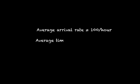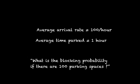The cars arrive at random and the cars stay parked for a random time. So let's say you observe the following: Average arrival rate is 100 per hour and average time parked is equal to 1 hour. What is the blocking probability if there are 100 parking spaces?